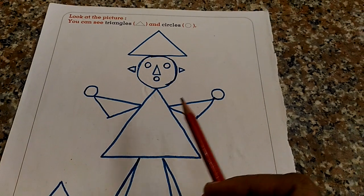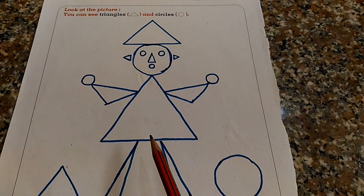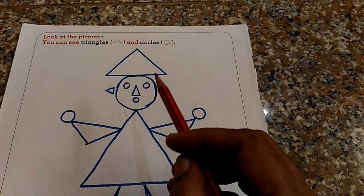See here. How many circles? How many triangles? See here. Count it. How many triangles?